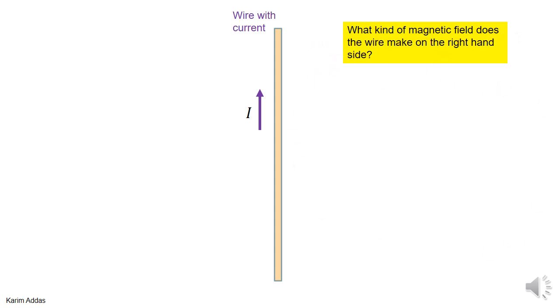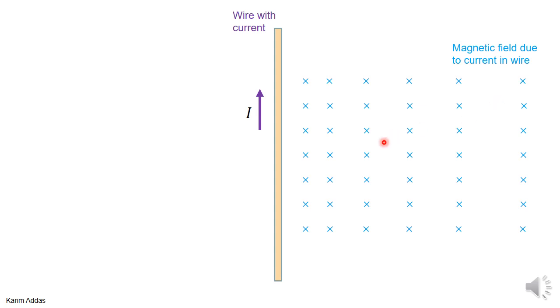Well, you know from before that the infinite wire makes a magnetic field going around in circles. So here on the right-hand side, the magnetic field will be into the page. On the left side, it'll be out of the page.